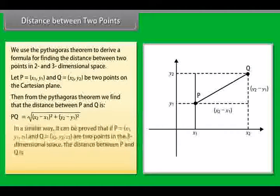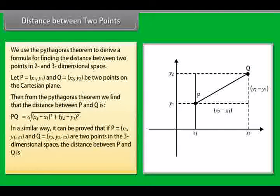In a similar way, it can be proved that if P is equal to x1, y1, z1 and Q is equal to x2, y2, z2 are two points in the three-dimensional space, the distance between P and Q is